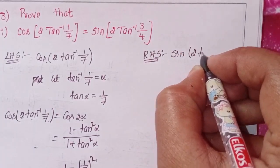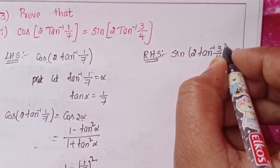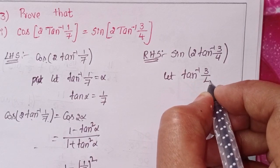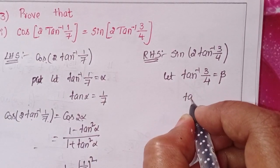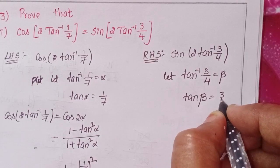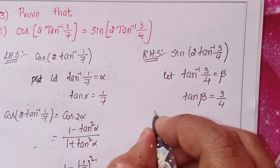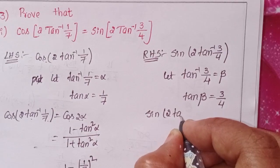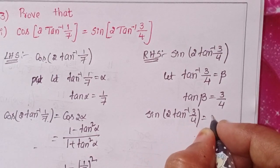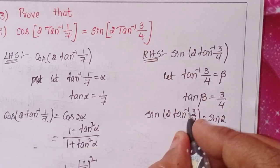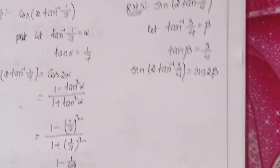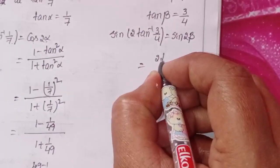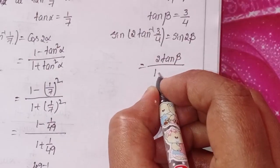Next, RHS: sin of 2 into tan inverse 3 by 4. Let tan inverse 3 by 4 equal to beta. RHS becomes sin of 2 into tan inverse 3 by 4 equals sin 2 beta. Using the formula sin 2 alpha in terms of tan: 2 tan beta by 1 plus tan square beta.